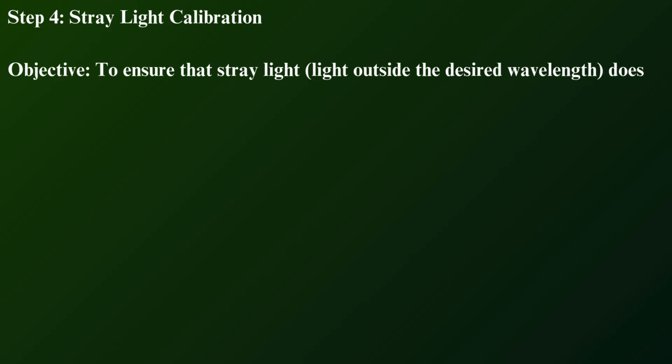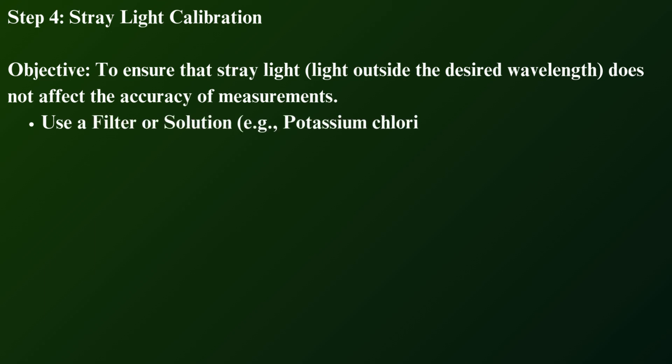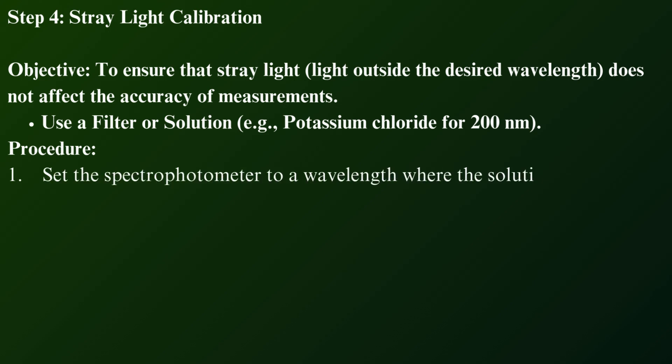Step 4: Stray light calibration. Objective: To ensure that stray light—light outside the desired wavelength—does not affect the accuracy of measurements. Use a filter or solution, for example, potassium chloride for 200 nanometers. Procedure: Set the spectrophotometer to a wavelength where the solution or filter is supposed to absorb all light, e.g., potassium chloride at 200 nanometers.